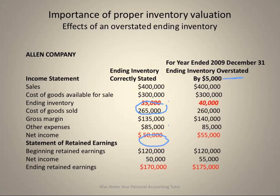But if we overstate the ending inventory by $4,000, the cost of goods sold is $5,000 less. Therefore, the gross margin is $5,000 more. Other expenses would be the same, but the profit will be $5,000 higher because we overestimated the ending inventory. Carrying that forward to the balance sheet, the retained earnings statement would be overstated by $5,000 because the profit was overstated by $5,000. So in 2009, we have an incorrect income statement and an incorrect balance sheet.